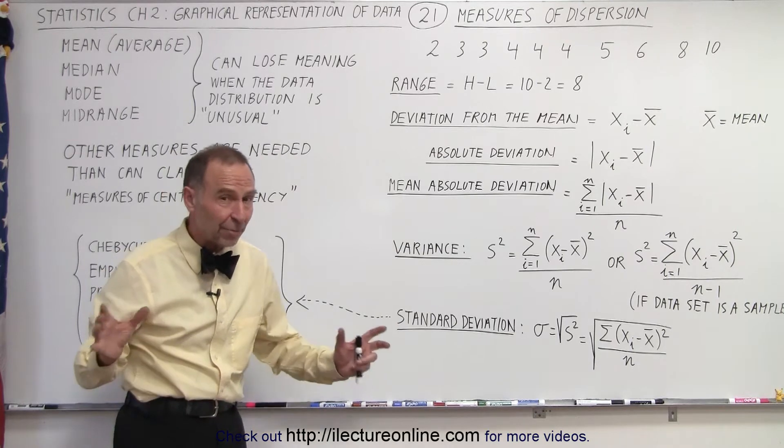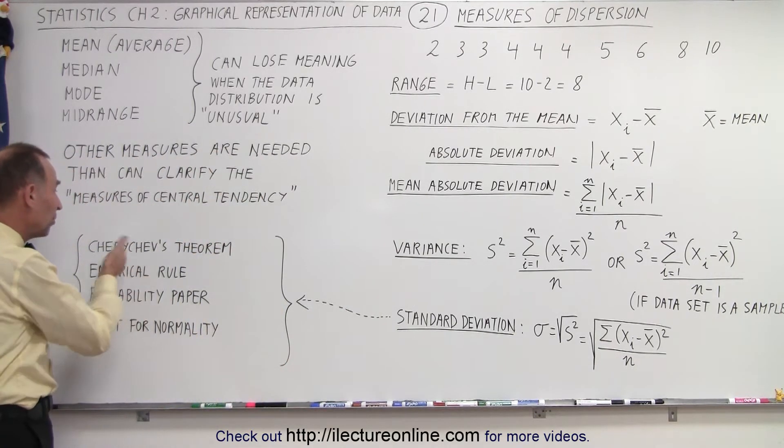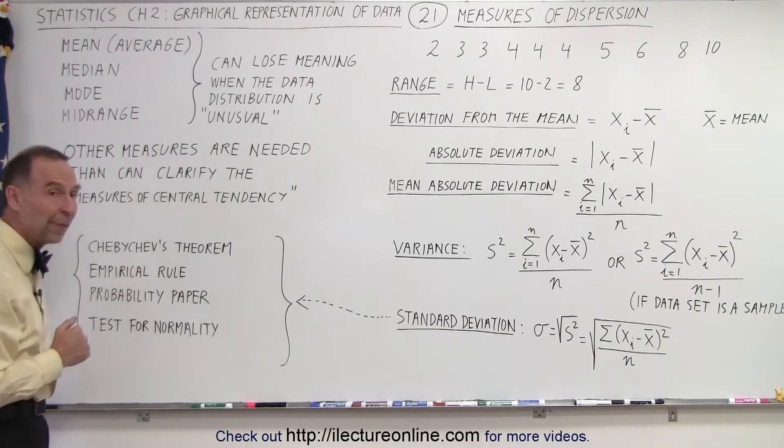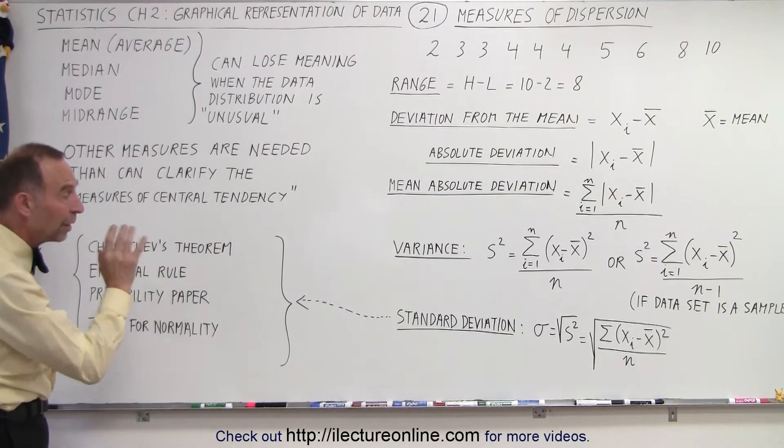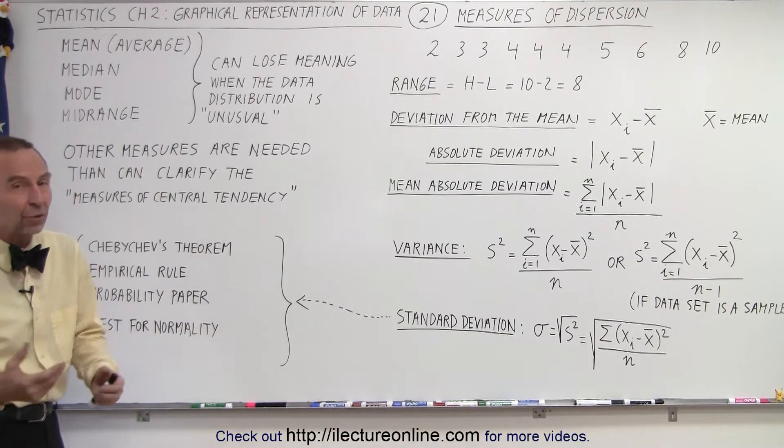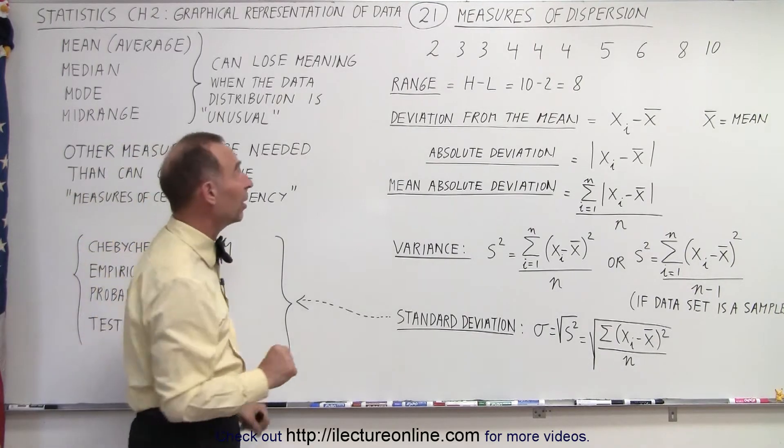And the standard deviation being a very important one, there are some checks that we use such as Chebyshev's theorem, empirical rule, probability paper, and test for normality to see how well we can trust the standard deviation information or how it truly represents what we're looking for. So a quick overview of what some of these things are.